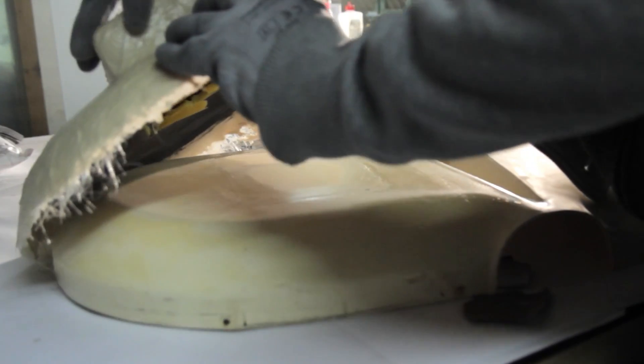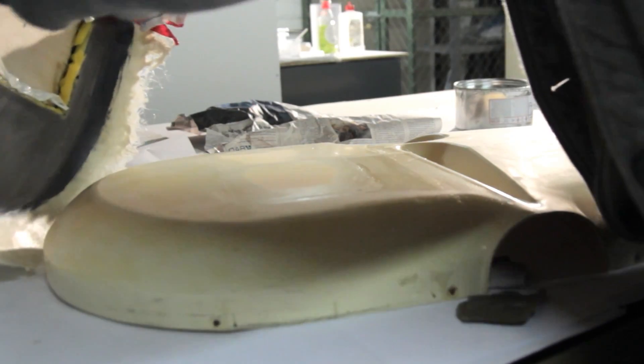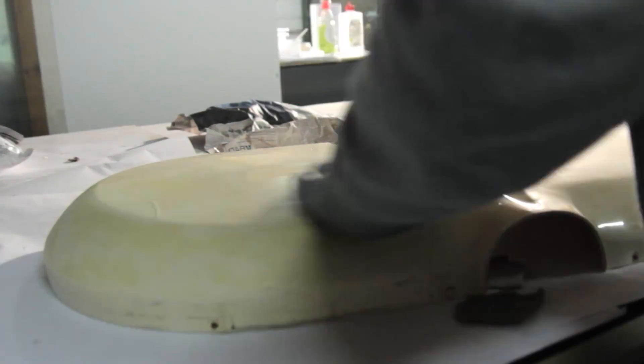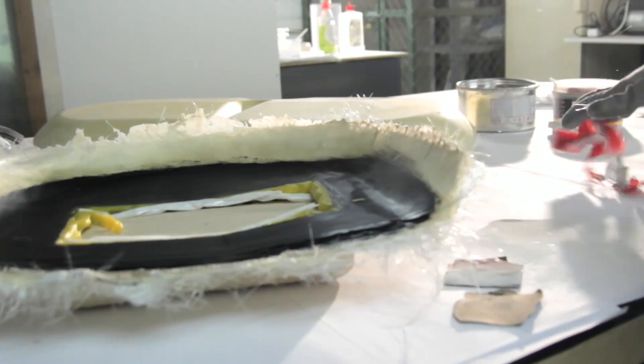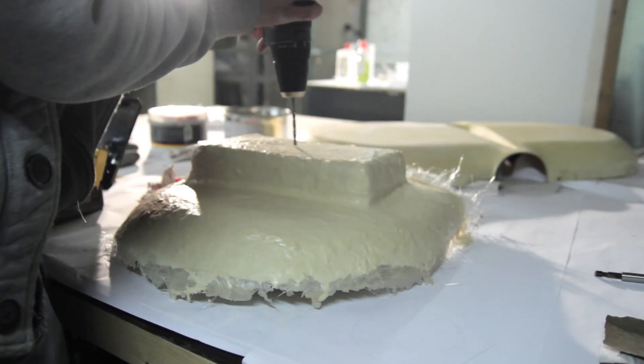This is the demolding. Demolding went quite easily, so I'm quite happy I didn't ruin the part. This is the modeling clay, you can reuse it.